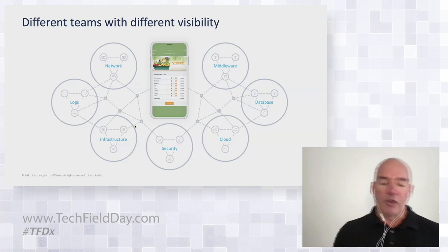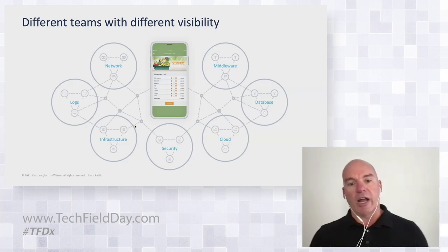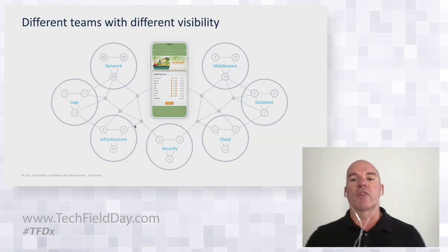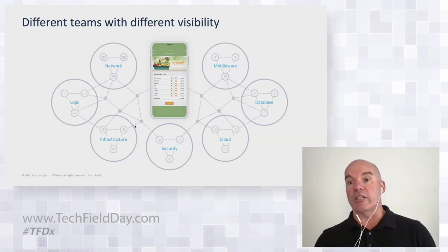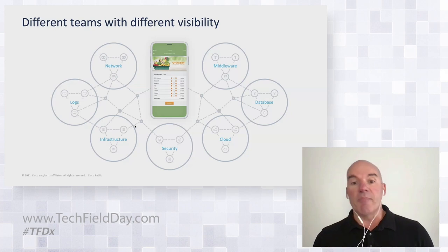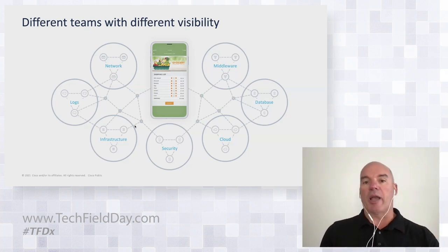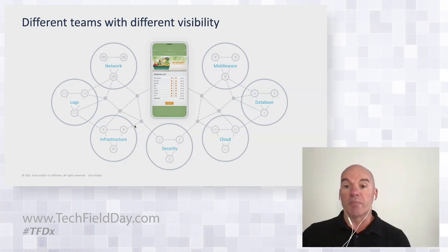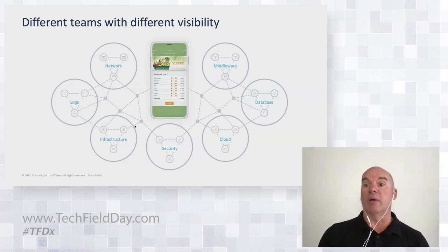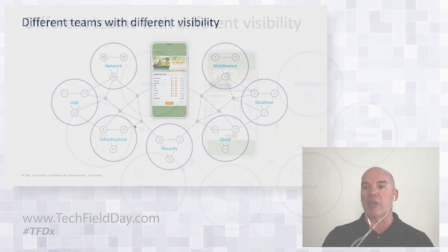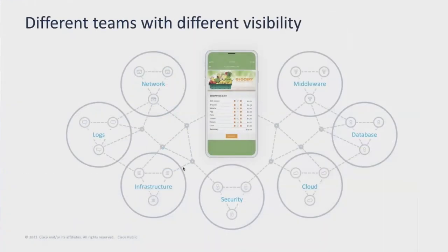Everyone — security, networking, infrastructure, application — they all have their own view of the same subject. If you're an application person, your take is the application topology, the layers, the communication, the components. If you're a networking person, you're looking at the same subject but with different lenses. It's very hard to help collaboration and communication between all those different silos.